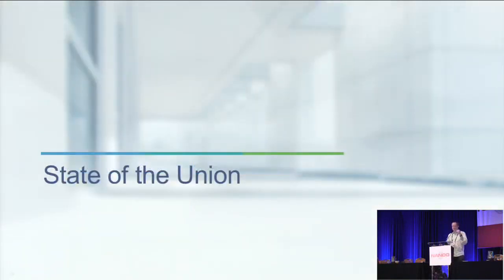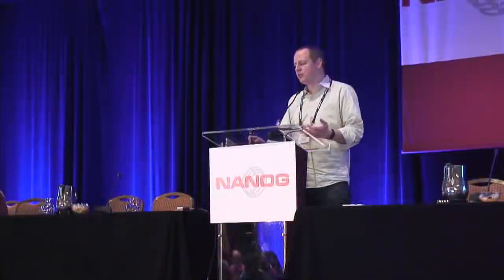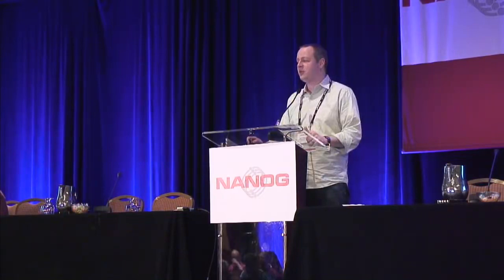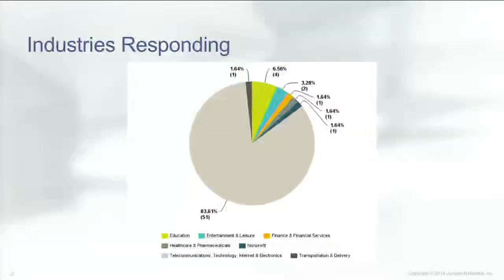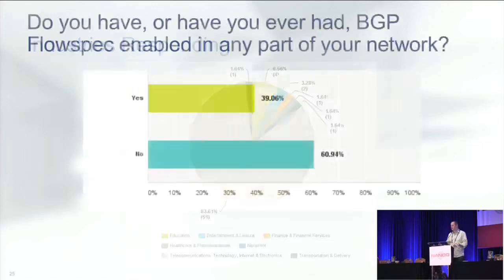The second half of this deck covers a survey I sent out to the NANOG mailing list asking about people's thoughts on BGP flow spec, whether they'd adopted it, and so forth. Not surprisingly for NANOG, the majority of respondents are in technology, telecom, or internet-type industries, but there were also respondents from education, entertainment, leisure, and finance.